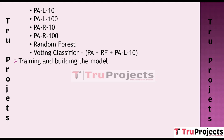Random Forest is an ensemble learning method that combines multiple decision trees to make predictions. It is known for its robustness and ability to handle high-dimensional data, and in text classification it can effectively capture relationships between features and labels. The Voting Classifier combines the predictions of Passive Aggressive, Random Forest, and PAL10 models. This ensemble approach often results in improved classification accuracy by leveraging the strengths of different algorithms.